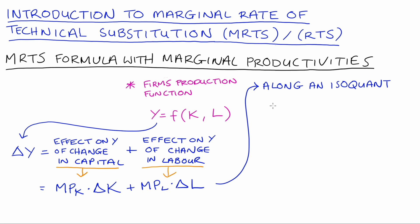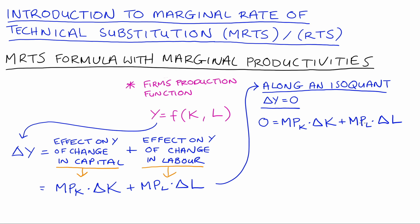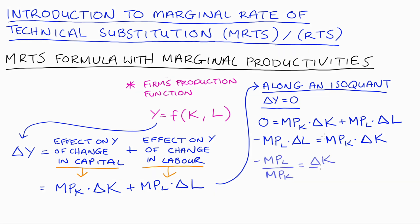Along an isoquant, the change in output equals zero by definition, since output is held constant. Substituting: 0 = MPK·ΔK + MPL·ΔL. Rearranging, −MPL·ΔL = MPK·ΔK. Dividing both sides by ΔL and MPK gives: −(MPL/MPK) = ΔK/ΔL. The right-hand side is our slope — rise over run, ΔK over ΔL — and we can see that slope equals the negative of the ratio of marginal products.